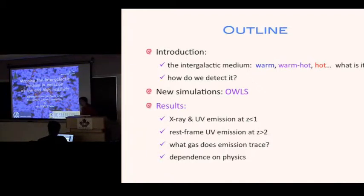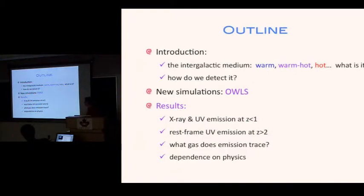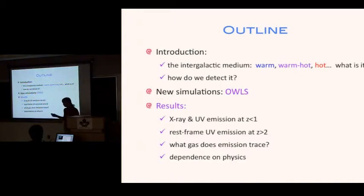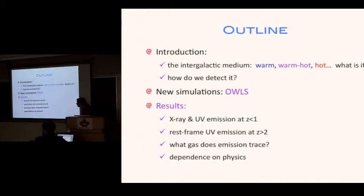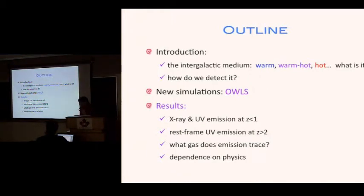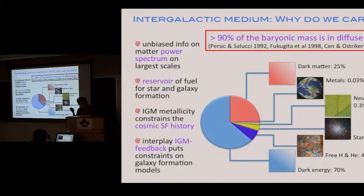In particular, we'll be talking about mapping the intergalactic medium through metal line emission at low and high redshift. Here's a brief outline: I'll discuss some basic properties of the intergalactic medium, then a few techniques we can use to detect it — in particular absorption and emission lines. I'll describe the OWS simulations running in Leiden, and then go through some of our main results.